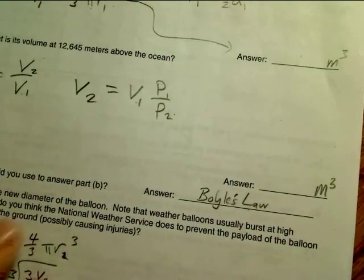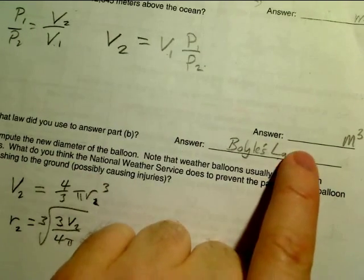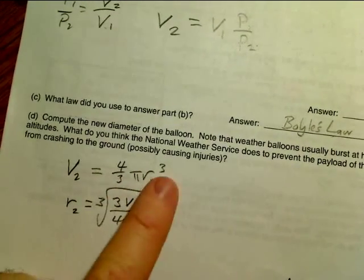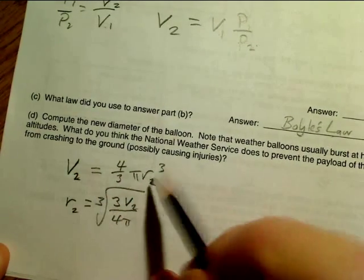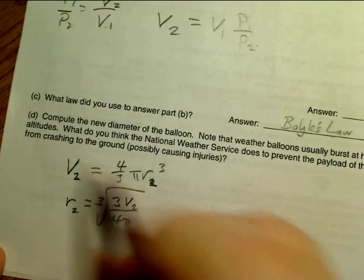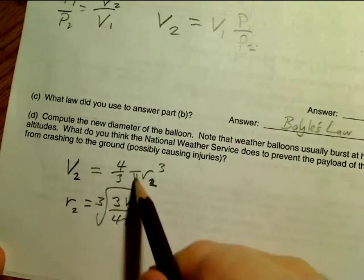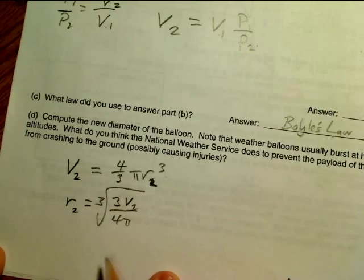Down at the bottom, they're asking you to figure out what the new diameter of the balloon is based on this volume over here. If the V2 is also 4/3 pi r cubed, but it's volume 2 and radius 2, you multiply both sides by 3, divide both sides by 4 pi, and then take the cube root.